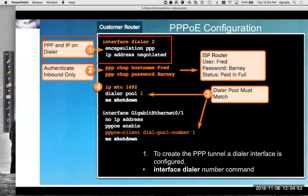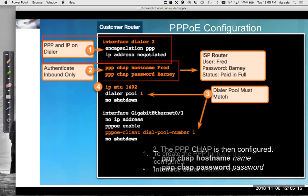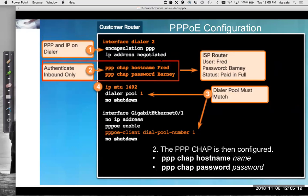As far as configuring PPPoE on Cisco IOS, we use something called an interface dialer. Here we have interface dialer 2, encapsulation PPP, and we're saying that the IP address is negotiated. This is what actually creates the tunnel. We negotiate the IP address and we're configured for CHAP with our hostname and password.